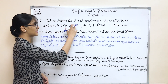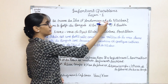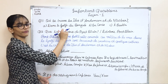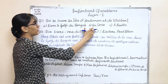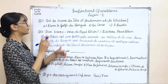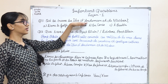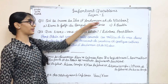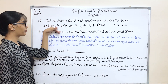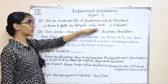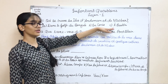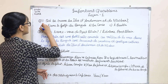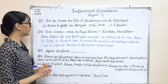The next question is: 'Où se trouvent les îles d'Andaman et de Nicobar — dans le Golfe du Bengale, en Corse, à Bastia?' Where do you find the Andaman and Nicobar Islands — in the Gulf of Bengal, in Corse, or in Bastia? The answer is obviously 'dans le Golfe du Bengale.'